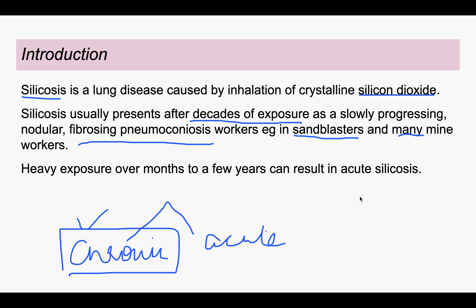Another form is acute silicosis. Heavy exposure to silicon can lead to acute silicosis. This condition is very less common, so if anybody talks about silicosis, that is mostly the chronic form.